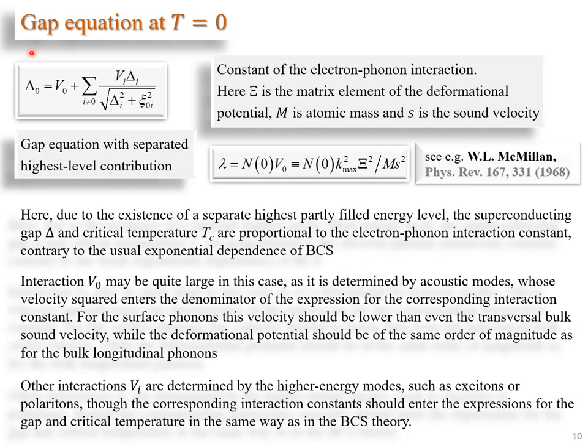Here we see gap equation with separated highest level contributions. Constant of the electron-phonon interaction has the following form. Here, due to the existence of separate highest partly filled energy level, the superconducting gap and critical temperature are proportional to the electron-phonon interaction constant, contrary to the usual exponential dependence of BCS. Interaction V sub 0 may be quite large in this case, as it is determined by acoustic modes, whose velocity squared enters the denominator of the expression for the corresponding interaction constant.